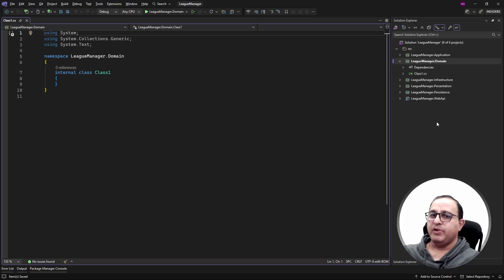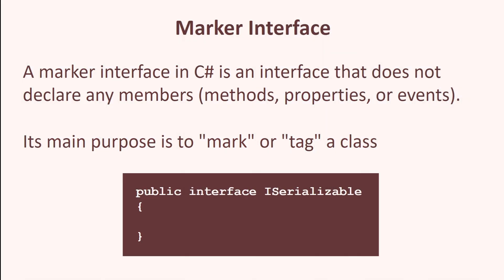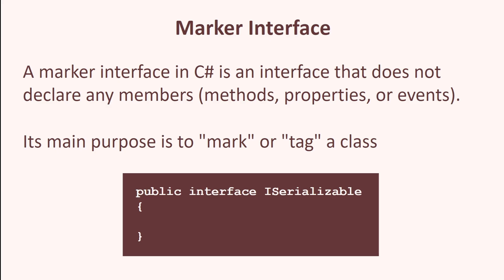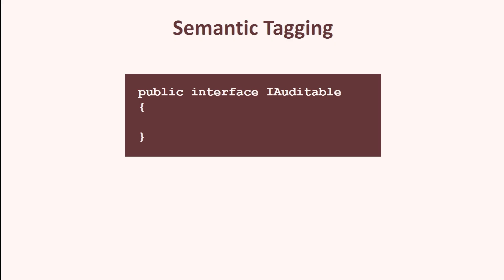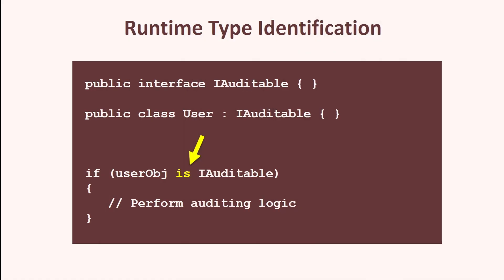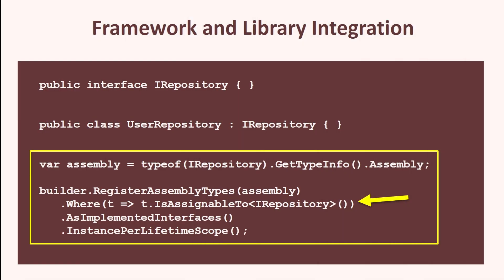I have opened the league manager application from my last video. First, we need a few marker interfaces to specify our entities, aggregate roots, and value objects. A marker interface in C# is an interface that does not declare any members such as methods, properties, or events — its main purpose is to mark or tag a class. Marker interfaces provide a way to add semantic meaning to a class and communicate design intent to other developers, clearly indicating the role or nature of a class within the system architecture. They also allow us to determine at runtime whether a class has a particular characteristic using the 'is' operator or reflection, enabling conditional logic based on the presence of a marker interface.